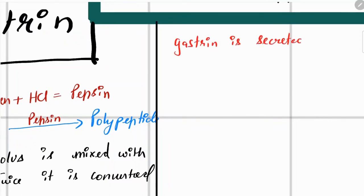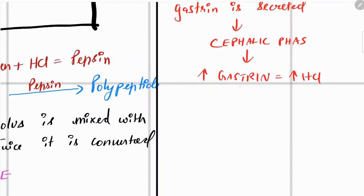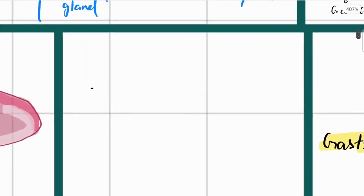Importantly, the G cells of the stomach start secreting gastrin when the vagus nerve is stimulated during the cephalic phase, so that when food enters the stomach and the gastric phase begins, HCl is already present inside the stomach. Our last phase is known as the intestinal phase.